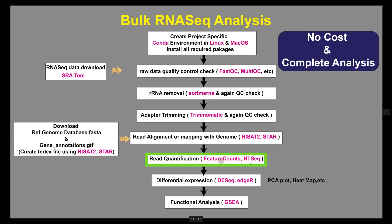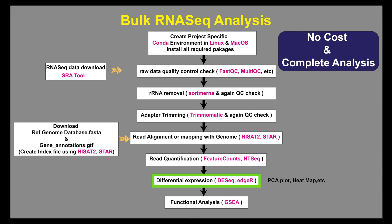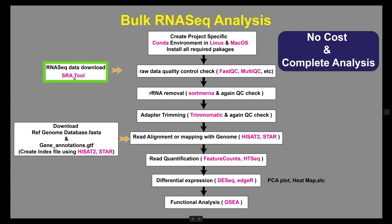FeatureCounts and HTSeq are tools for counting reads in features of a genome, such as genes or exons, to prepare data for downstream analysis like differential gene expression from RNAseq experiments. DESeq2 and edgeR are popular R packages for differential gene expression analysis from RNAseq data, and for functional analysis using GSEA.